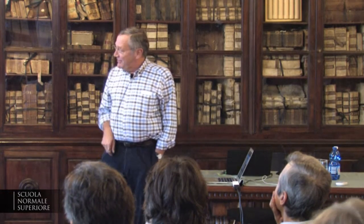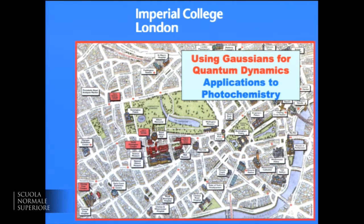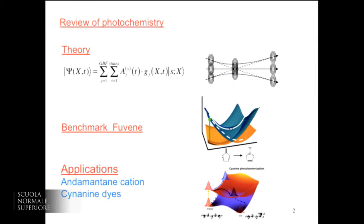The picture you see there is where I come from in London — Imperial College is just on the other side of Hyde Park. I'm going to talk mainly about applications to photochemistry. So in the same way that journals put a graphical table of contents, maybe that's where I should start. My applications are going to be to photochemistry, so I've got five minutes to tell you everything you ever needed to know about photochemistry.